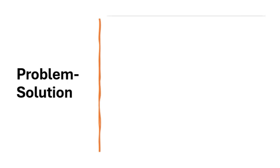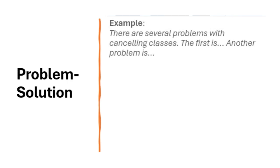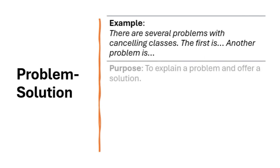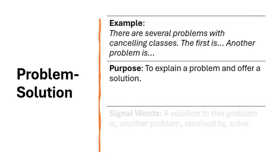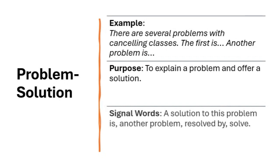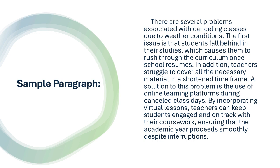Problem-solution is a common organizational pattern, especially in persuasive writing. Here, you first outline a problem and then propose a solution. For example, you might discuss the issue of classes being canceled due to bad weather, which causes students to fall behind. Then you'd introduce online learning as a potential solution to keep students on track. This approach works well when you're trying to convince the reader to adopt a new idea or strategy. This paragraph illustrates the problem-solution pattern by presenting a challenge — canceled classes due to weather — and proposing a solution: online learning platforms.